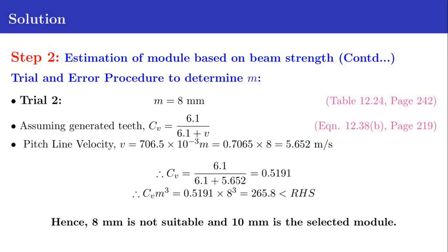There may be a possibility of a lower value of module that is also suitable. To check for that condition we go for trial 2. In trial 2, we find out a module that is lower than 10 millimeter. The standard module lower than 10mm is 8mm, from table 12.24 in page 242. Again we assume generated teeth, so CV equals 6.1 divided by (6.1 plus V). The pitch line velocity V in this case is 0.7065 times 8 equals 5.652 meters per second.